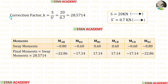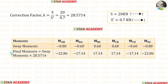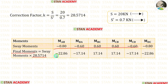Now let us find the correction factor K. The formula is S upon S-dash. We know the values of S and S-dash — applying them, we get K equal to 28.5714. To find the real final moments, we multiply the sway moments by the correction factor 28.5714, giving us the final moments.